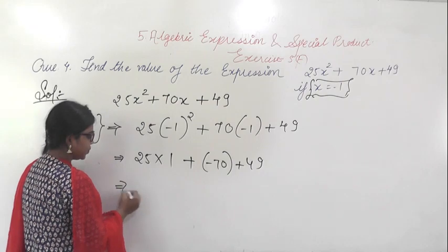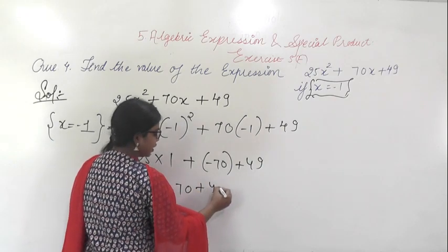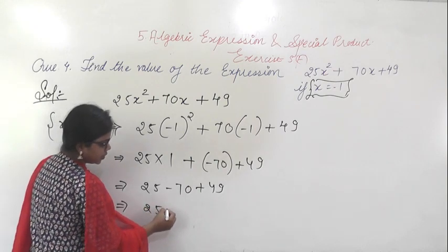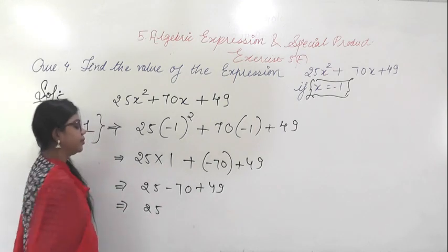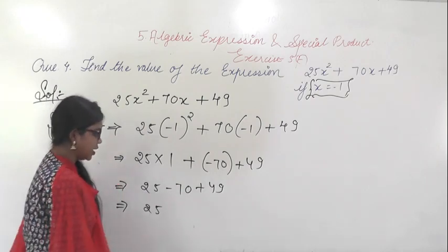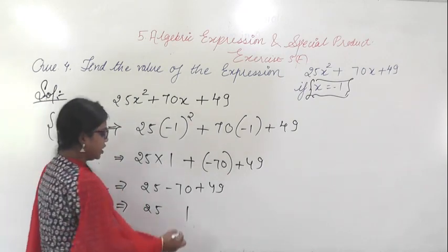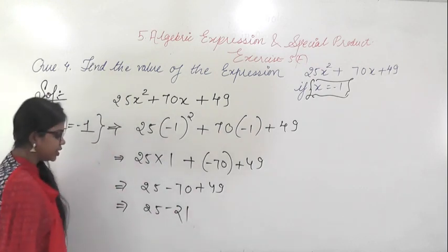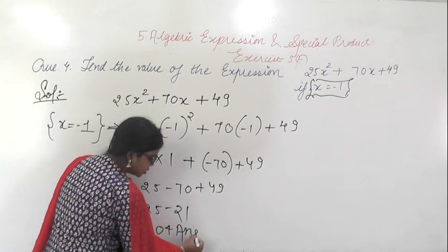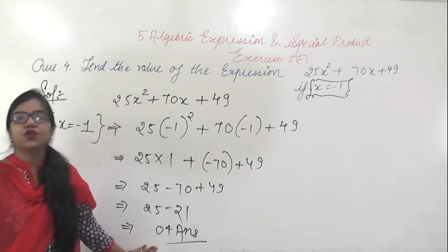So you will calculate here: 25 - 70 + 49. On solving, subtracting: 10 - 9 is 1 and 6 - 4 is 2, so this is 25 - 21, and you will get 4 as the answer. So on solving the expression with x = -1, you are getting 4 as the answer.